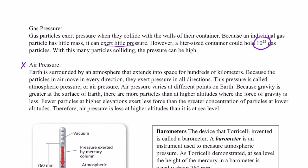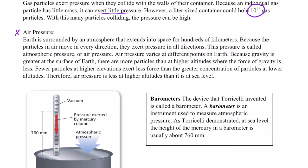Specifically, let's talk now about air pressure. Fortunately, our Earth is surrounded by an atmosphere that actually extends into space for several hundred kilometers. Because the particles in air move in every direction, they exert pressure in all directions, not just in a downward direction, but in a sideways direction and in an upwards direction. That pressure is called atmospheric pressure, or air pressure.